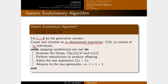You create as many individuals as you need. Then, while the stopping condition is not met, we evaluate the fitness of every individual in the population, perform reproduction via mutation or crossover or a combination, and then select a new population for the next generation — either from children only, or parents and children combined. We then advance to the next generation.